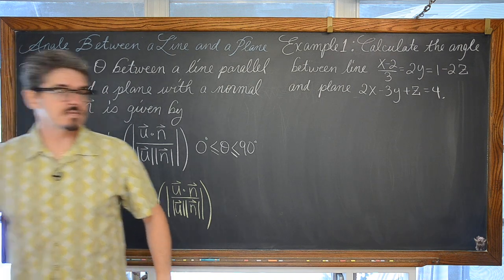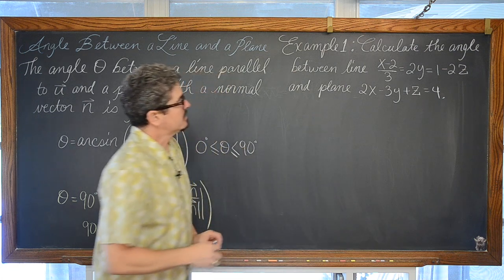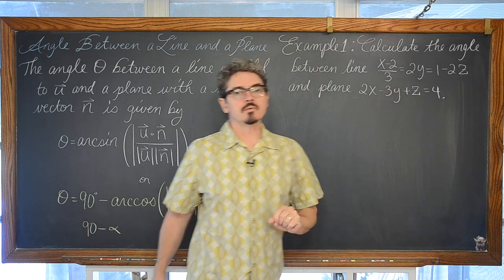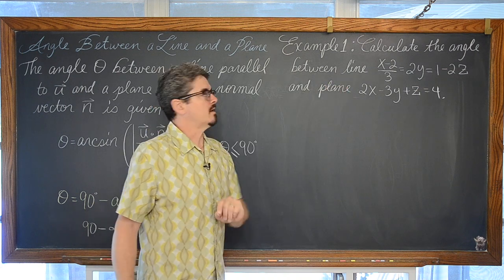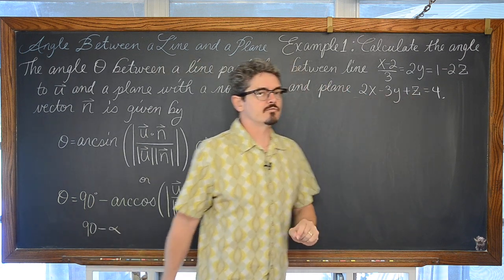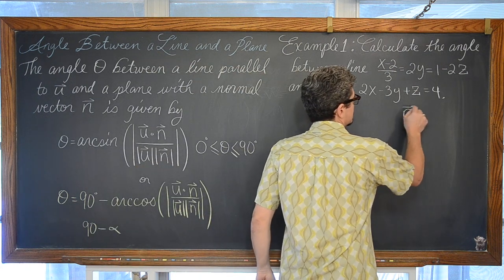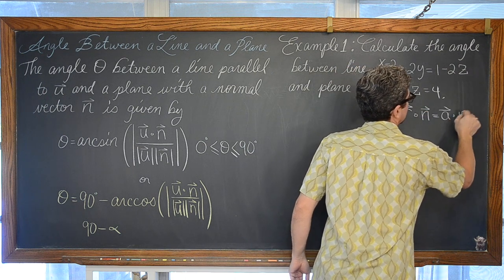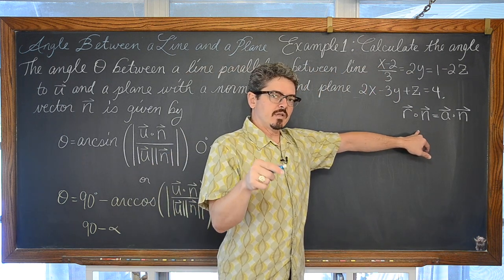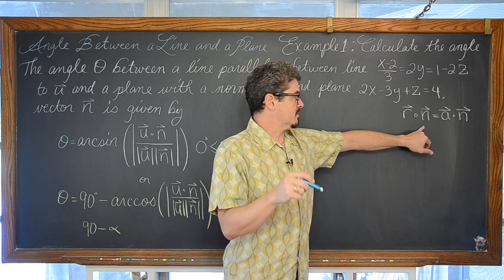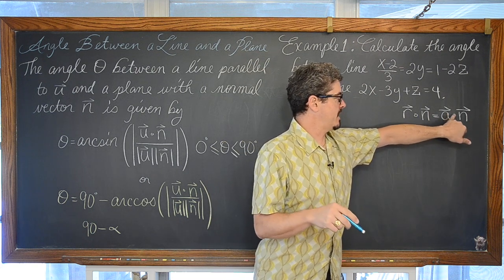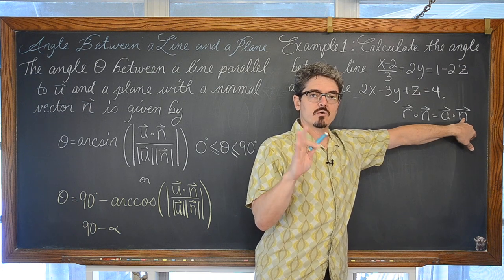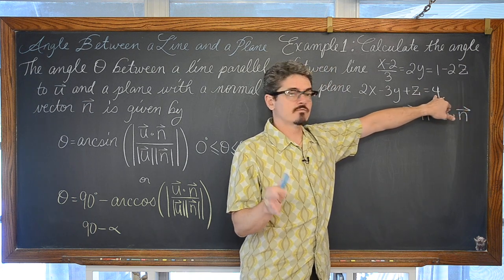Our first example: calculate the angle between the line (x − 2)/3 = 2y = 1 − 2z and the plane 2x − 3y + z = 4. For a plane in Cartesian format, the normal vector components are just the coefficients of x, y, and z. So our normal vector n is (2, −3, 1).